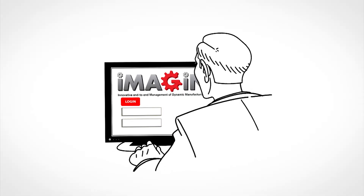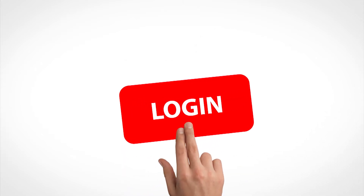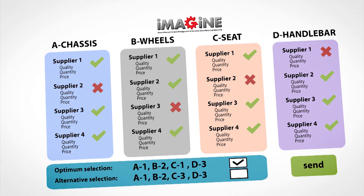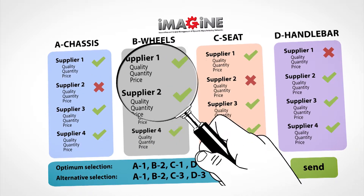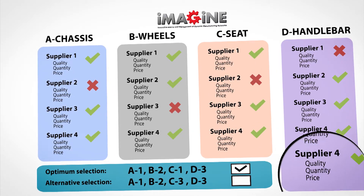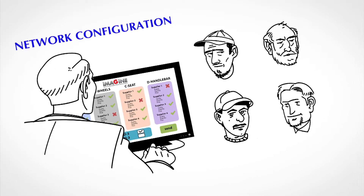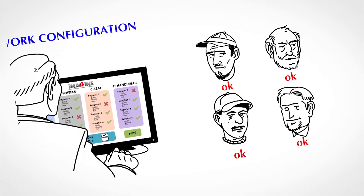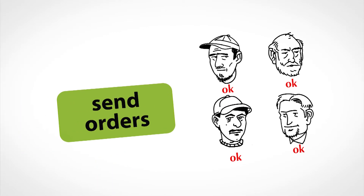Mr. Goodworth can then proceed with the selection of suppliers for each individual component. He logs into the Imagine platform, which holds all profiles and associated information regarding the members of the dynamic manufacturing network. After uploading his manufacturing requirements, Imagine indicates the ability and capacity of every DMN member concerning the production of each individual component. Mr. Goodworth needs only to review the alternatives proposed by the platform and select the most appropriate ones. The platform then sends out the manufacturing orders to the selected suppliers to confirm delivery dates and initiate production.